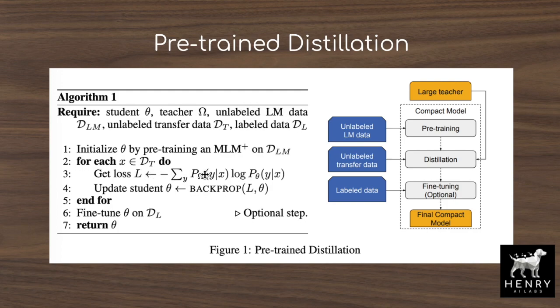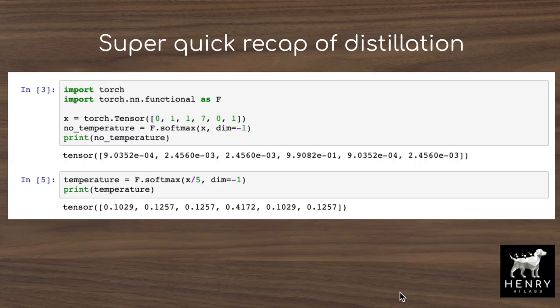Using D_T, the unlabeled data still relevant for the downstream task, you then do knowledge distillation with the off-the-shelf massive teacher model, and then end the algorithm by fine-tuning the student network on the small labeled dataset for the task of interest. If you're unfamiliar with knowledge distillation or masked language modeling pre-training, here's a quick overview of these techniques essential to this paper.